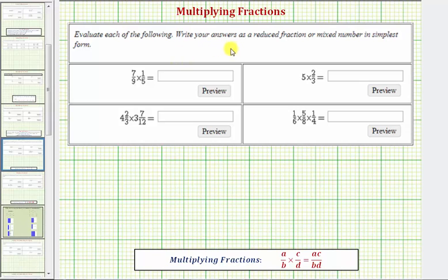We want to find the products and write the answers as simplified fractions or mixed numbers. In general, to multiply fractions, we multiply the numerators and we multiply the denominators. But typically, we do want to simplify out the common factors between the numerators and denominators before multiplying rather than after.